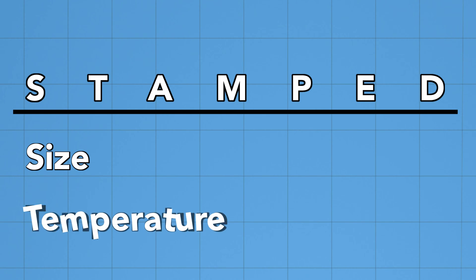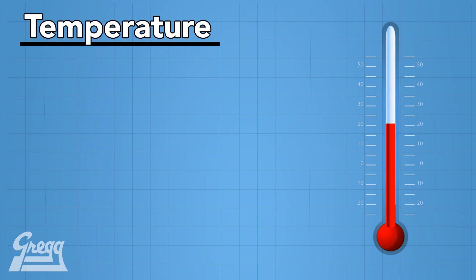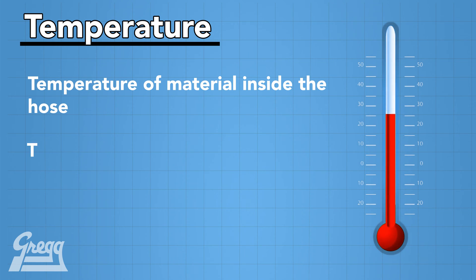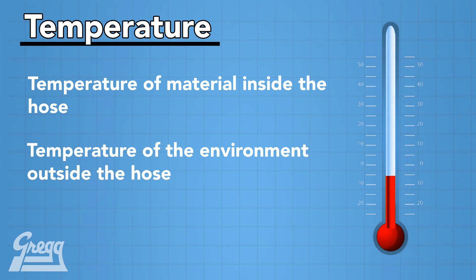T stands for temperature. That is the temperature of the material which is inside the hose, the minimum and maximum temperature of the outside environment that the hose assembly is exposed to, and whether it is intermittent or constant temperature.